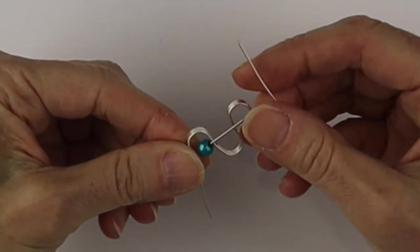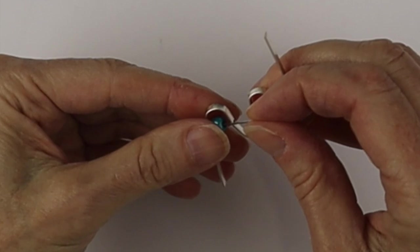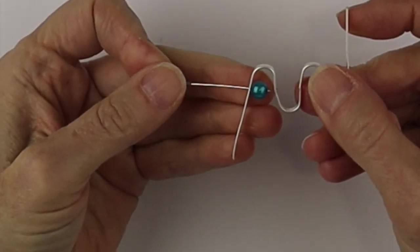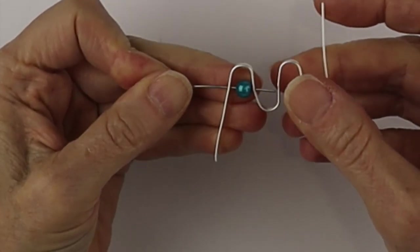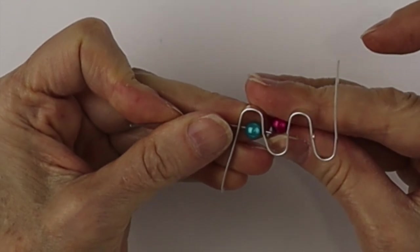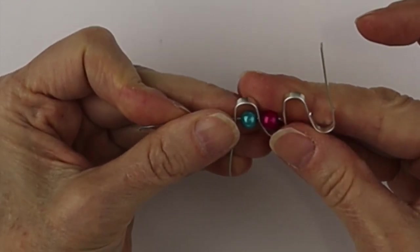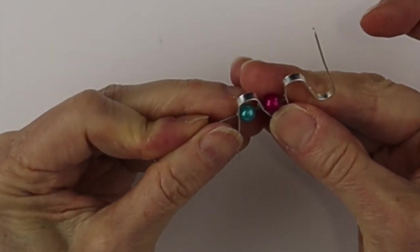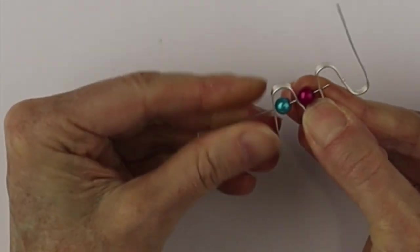We're going to take a head pin, put it through the first hole, put on a six millimeter miracle bead, and then stick the head pin through the next hole and keep adding beads to stack them up in between the loops on the flat wire.